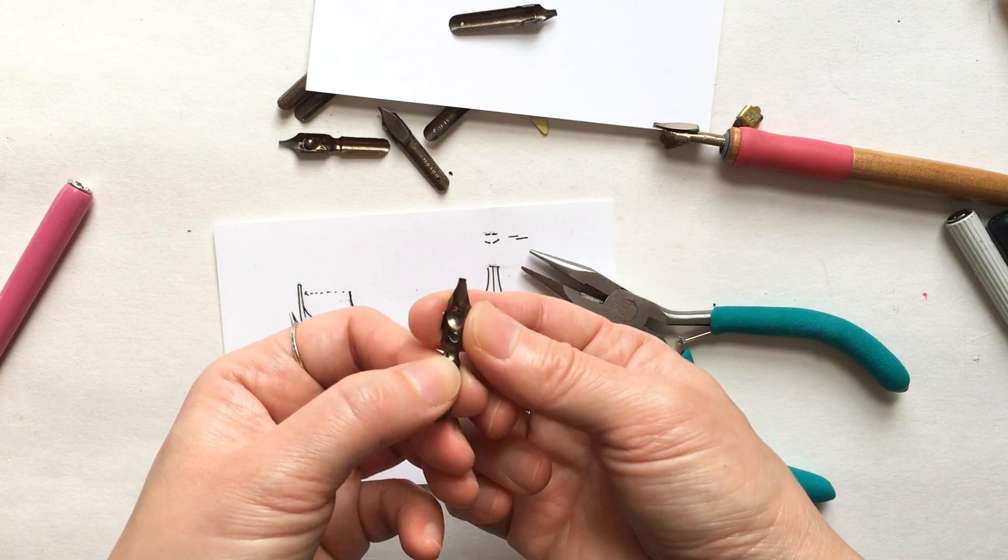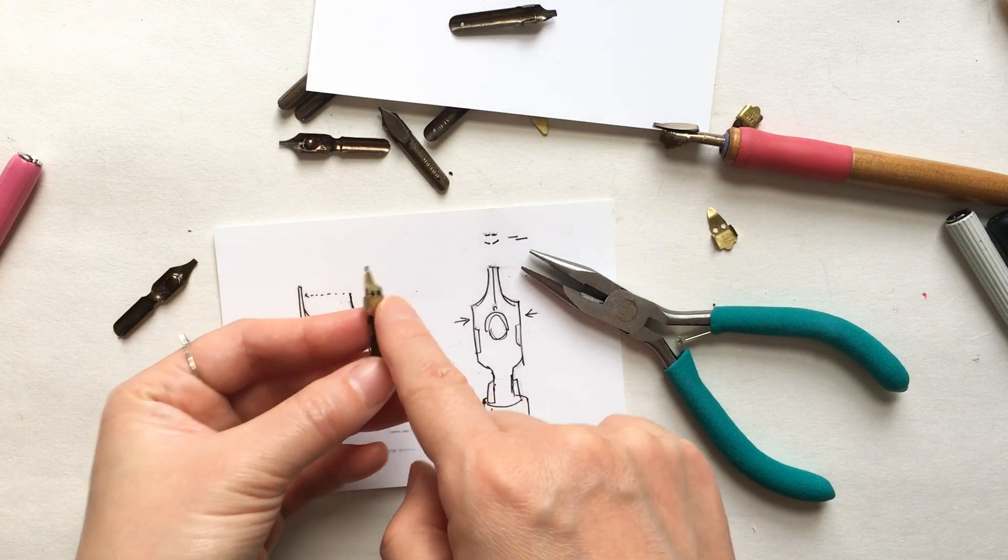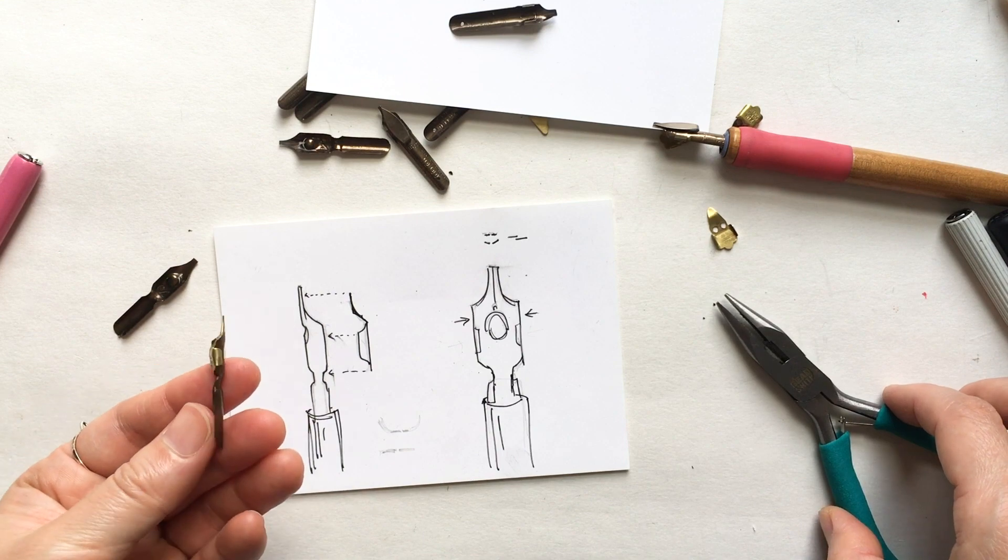If you see light coming through the crack of that slit, that means it's too tight, so you need to adjust it more. And I also like to create a secondary bend so it kind of fits nicely to the profile of the nib. So that's all you need to do for the nib.